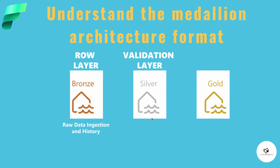The silver layer is where you validate and refine your data — also known as the validated layer. It is the second layer of the Medallion architecture. Typical activities in the silver layer include combining and merging data, enforcing data validation rules such as removing nulls or removing duplicate values.